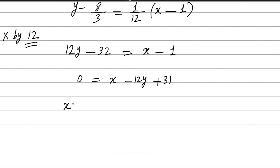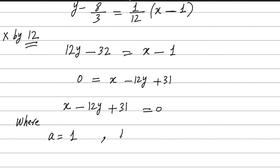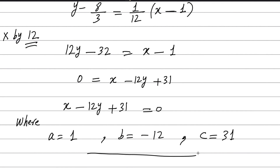The required answer is x minus 12y plus 31 equals 0, where A equals 1, B equals negative 12, and C equals 31. This is the answer for part C.